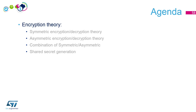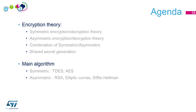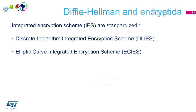Let's check the agenda. Encryption theory is done: symmetric, asymmetric, and shared secret generation with Diffie-Hellman. The main symmetric algorithms: Triple DES and AES (with chaining modes CBC, CFB, OFB, or counter mode CTR). For asymmetric: RSA, elliptic curves, Diffie-Hellman, and ECDH. There is also a standard for combining symmetric and asymmetric: ICES (Integrated Encryption Scheme) — specifically DLIES (Discrete Logarithm IES) and ECIES (Elliptic Curves IES). Note: you don't encrypt directly with elliptic curves; you always combine ECDH with symmetric encryption.